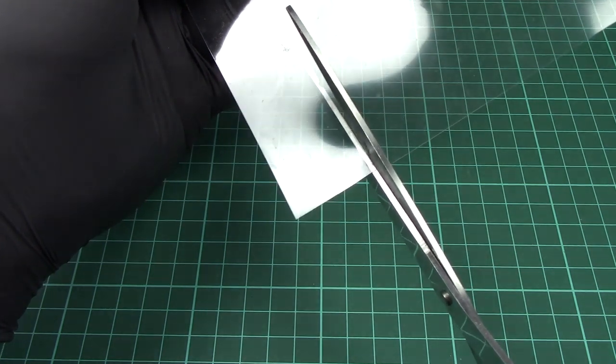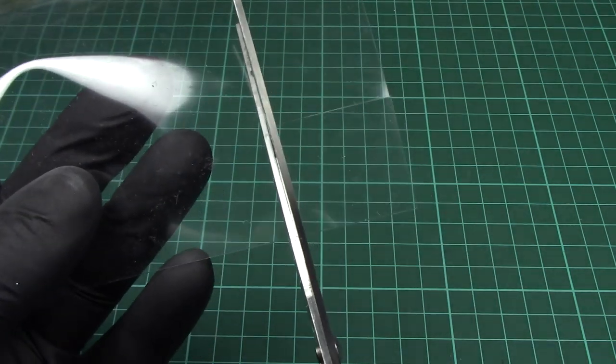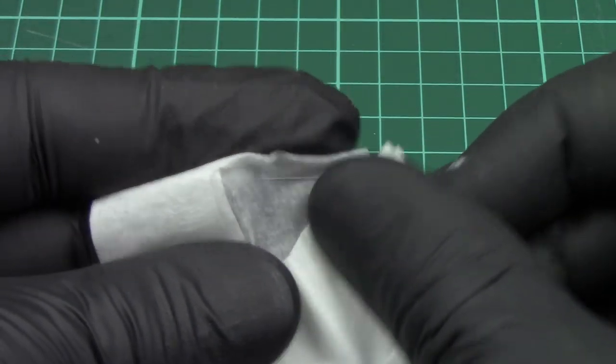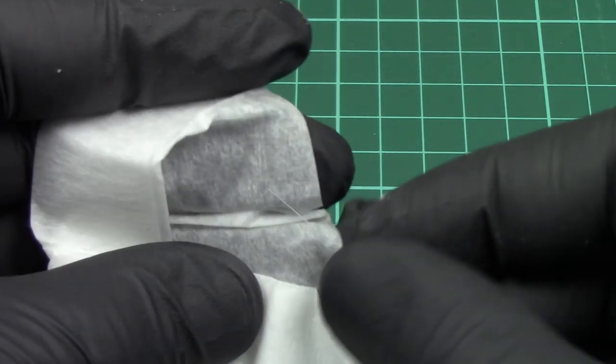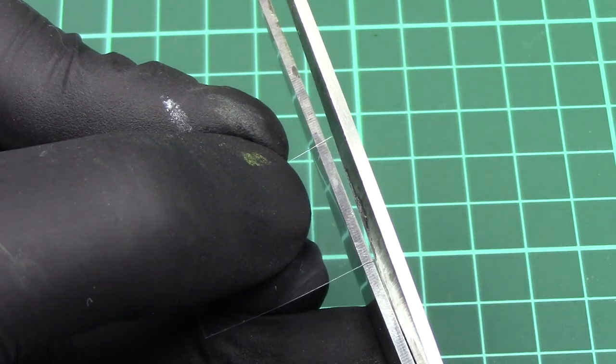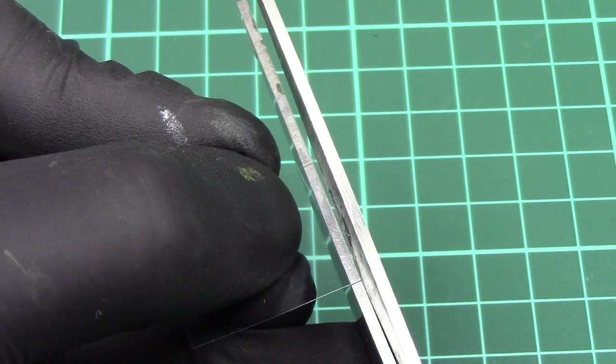For ease of handling I cut a more manageable piece of the sheet. This material attracts a lot of dust due to static and it is a good idea to clean it up a bit. Next I trim the piece to the desired shape, leaving the bottom side untrimmed for easier handling.